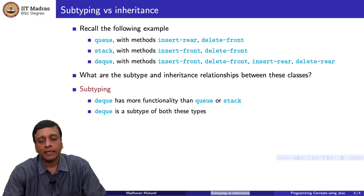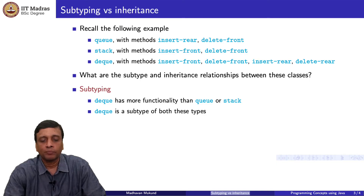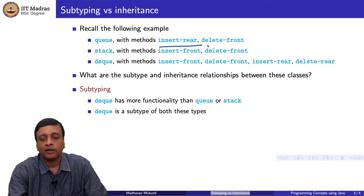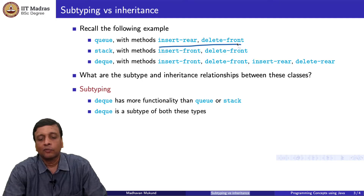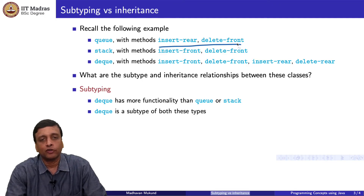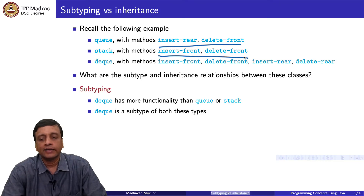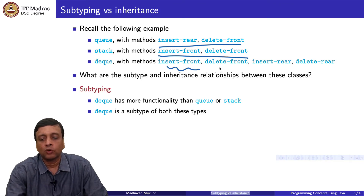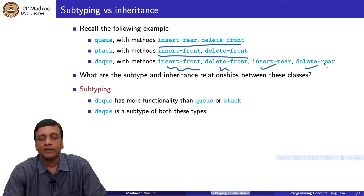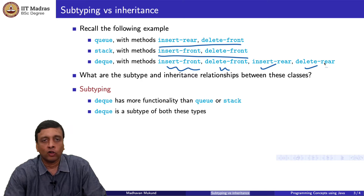Looking at subtyping: a subtype should have at least the capabilities of the supertype and more. A queue requires two operations — insert rear and delete front. A deque has those two operations and two more, so a deque is a subtype of queue. Similarly, a stack requires insert front and delete front, and again a deque has both of these and more. So in both cases, deque is a subtype because it has all the capabilities of queue and all the capabilities of stack.